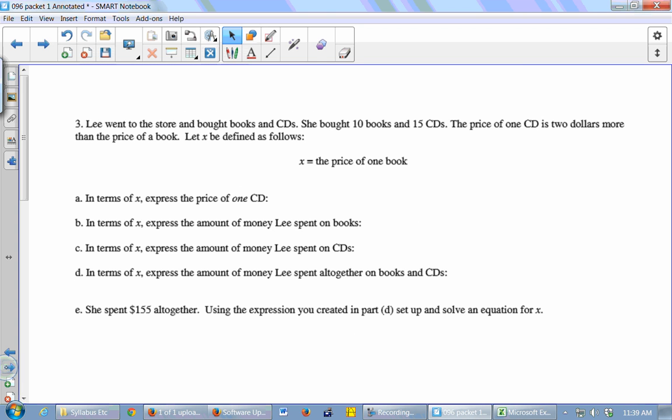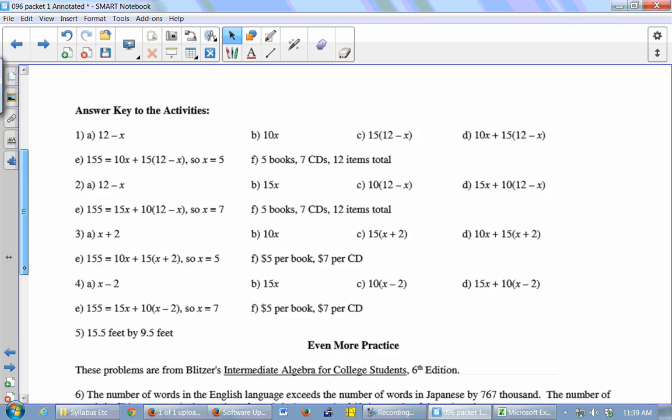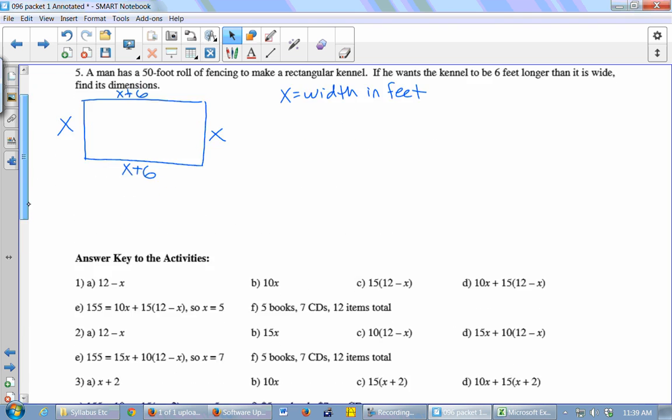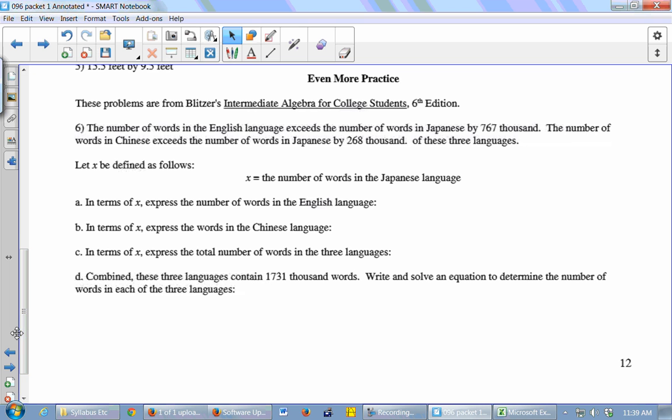So you should get all the way up through this number five with the rectangle, all the way up through page 12, halfway through page 12. And then right after the activities there are the answers, so you can always check your work as you're working. And then there's something called even more practice. This is entirely optional. If you finish the activities early in class you can start these.